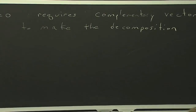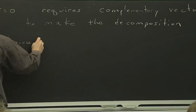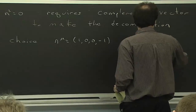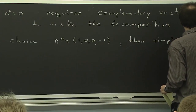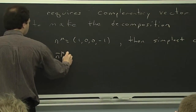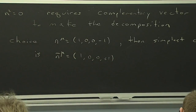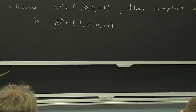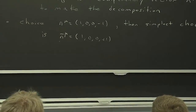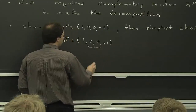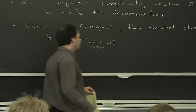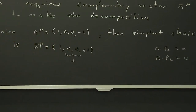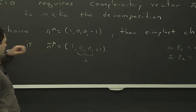The simplest choice: if we choose n to be (1, 0, 0, −1), then the simplest thing for n-bar is to pick n-bar to be (1, 0, 0, +1). That's a light-like vector. When you dot it into n, you get 2, so it satisfies all the criteria. Once you've chosen these two vectors, PERP is the space orthogonal to them — defined such that n dot PERP equals 0 and n-bar dot PERP equals 0. So you need to know what n and n-bar are in order to define what PERP is.